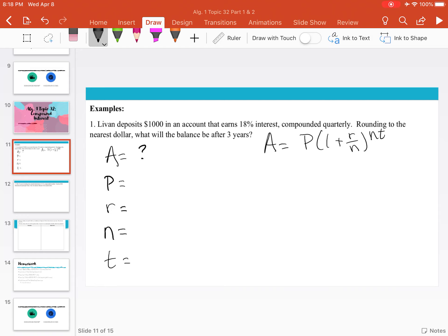P stands for the principal, what Levon starts with. We know he deposits $1,000 into the account. The rate is the interest rate, 18%. Remember we have to convert it to a decimal. Move the decimal to the left, and I end up with 0.18.